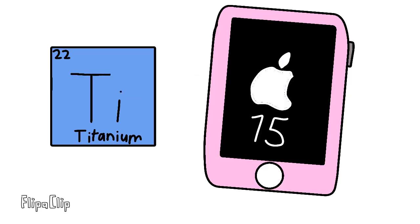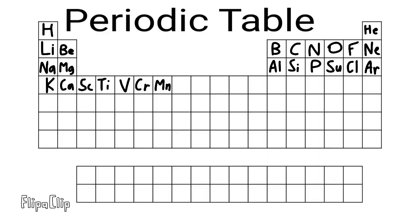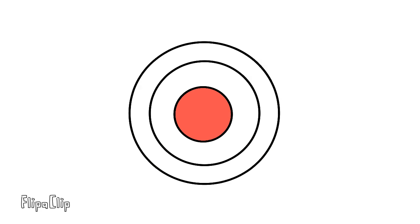Scandium, titanium, vanadium, and chromium, and manganese. This is the periodic table, noble gases stable, halogens and alkali react aggressively, each period will see new outer shells, more electrons are added, moving to the right.